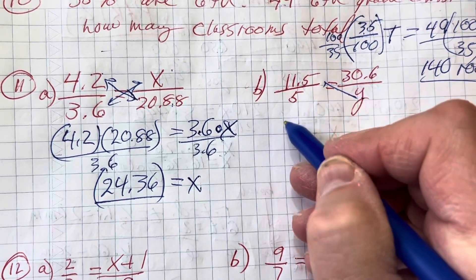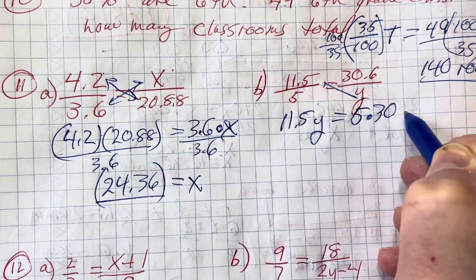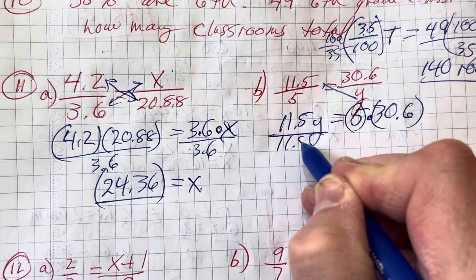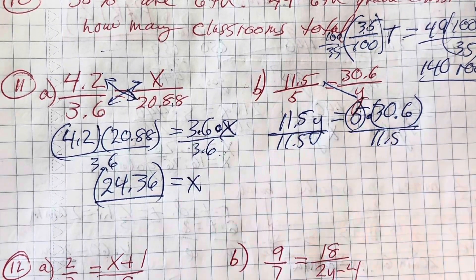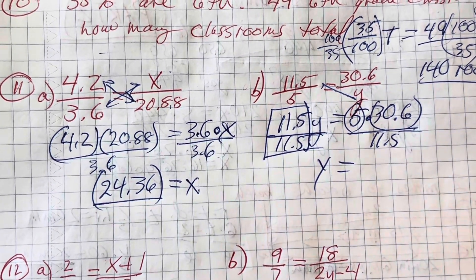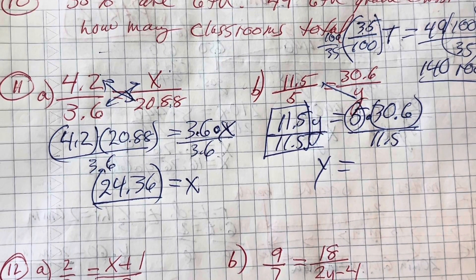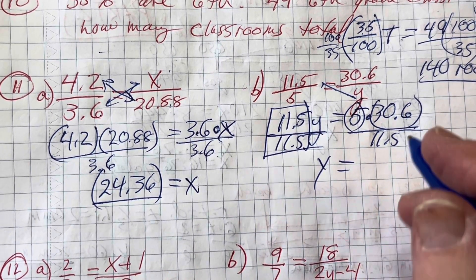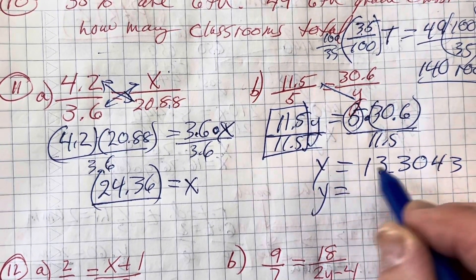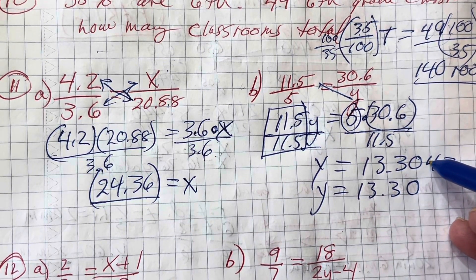This next one is done the same way. Just watch. 11.5 times y equals 5 times 30.6. I'm going to divide both sides by 11.5. It comes out really nice. I get 13.3043. So if I round to the nearest hundredth it's 13.30, not 3.1. This number has to be 5 or greater to make that a 1.